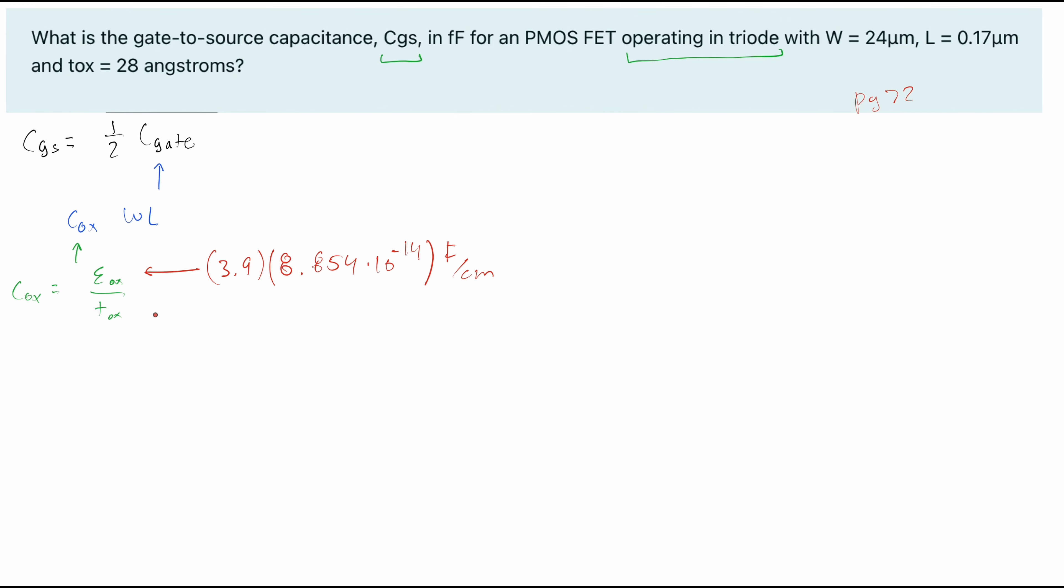And this is going to be for Farad centimeters. Now our TOX is going to be, since we're solving in centimeters, we can put this in meters, but for centimeters, we are going to want to write this. If we just plug in the value as our 28 times 10 to the negative 8 centimeters. Now let's rewrite everything. So our equation really is going to be one half times our WL times our E naught X over our T naught X.